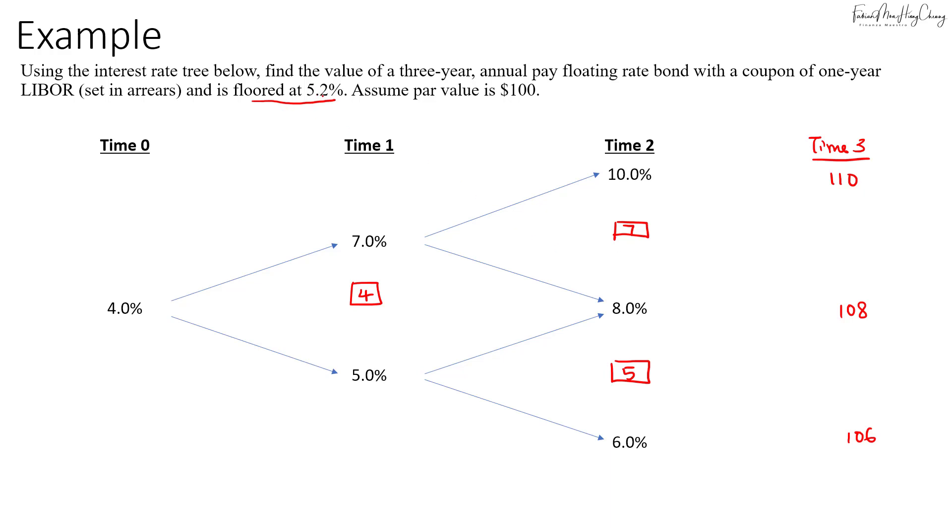Now check if any of these coupons is below 5.20. Of course, $4 is below 5.20, so we'll exercise the floor and this will become 5.20. And of course, $5 is below 5.20, so that's pushed back to 5.20. But the rest are above 5.20, so let's keep them that way.